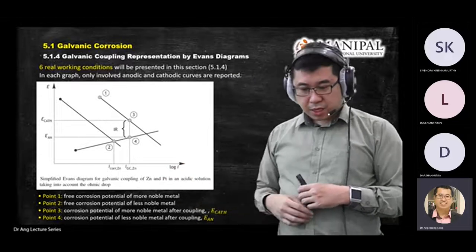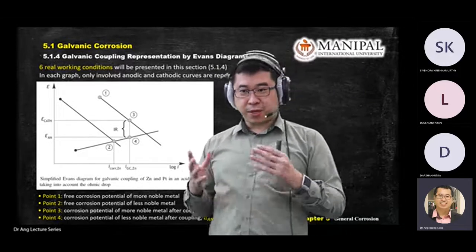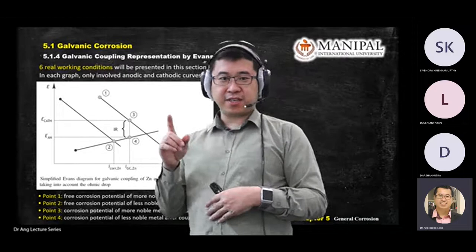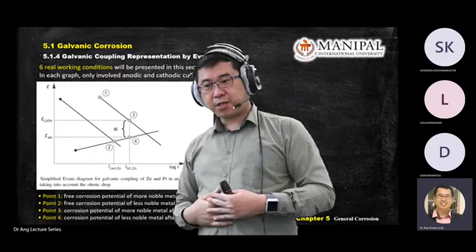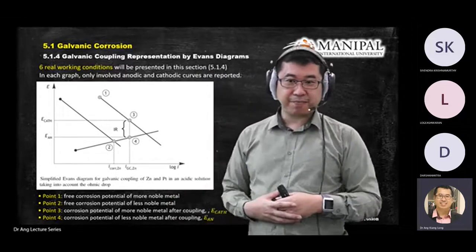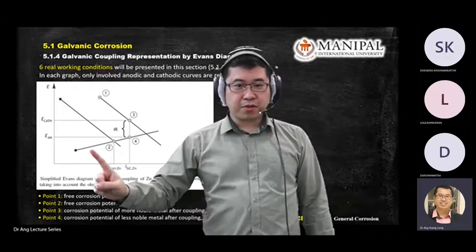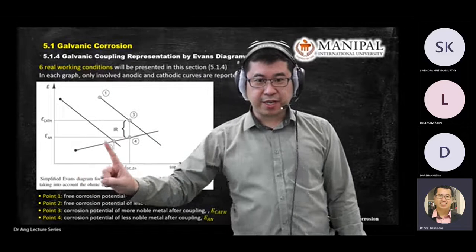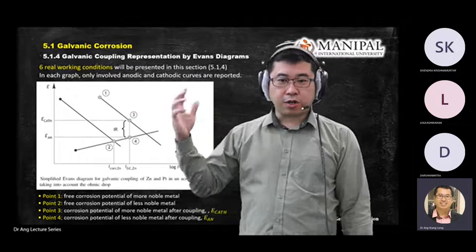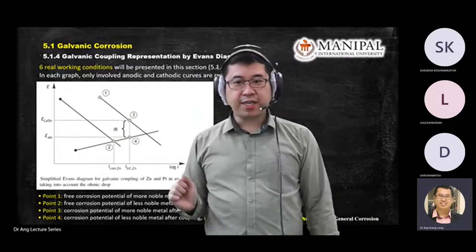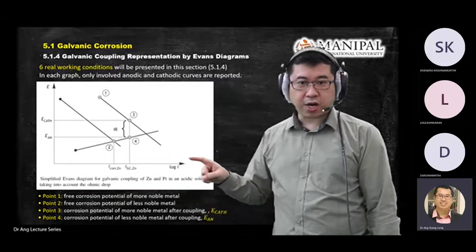For two metals, you look at the potential table — the E superscript zero table — which will be given. From the table you decide which one becomes cathode and which one becomes anode. The question will ask you to construct an Evans diagram, which is a plot of potential E versus log I, where I is current or corrosion rate (current density).